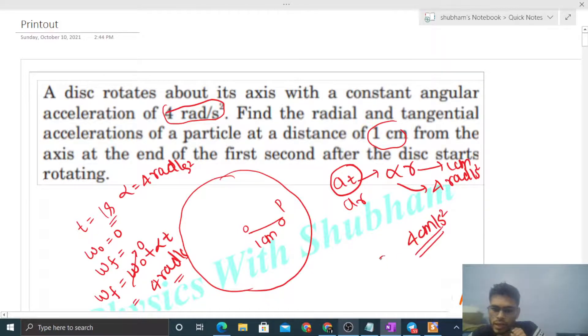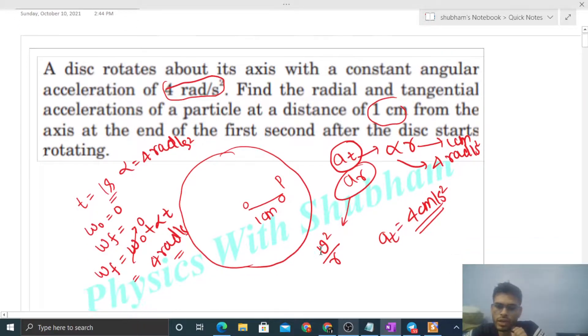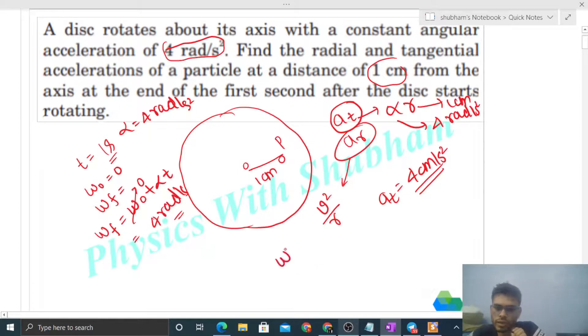This is the value of tangential acceleration. And what is the radial acceleration? It is v square by r, or you can also write it as omega square into r, right? So omega that will be 4 radian per second. So that will be 4 square into r, that is again 1. So how much is this? 16 centimeter per second square is the value of radial acceleration after one second.